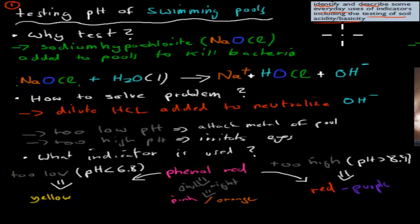The first one is we use indicators to test the pH of swimming pools. Now why do we test the pH of swimming pools? It's because we use sodium hypochlorite which is NaOCl, sodium hypochlorite right here. And we use that to kill bacteria. So we obviously want to make sure our swimming pools are more or less bacteria free and we use the sodium hypochlorite to do that. Now the problem is when we have this sodium hypochlorite and we add that to water which we would when we have it in a swimming pool,